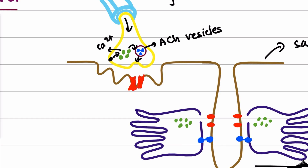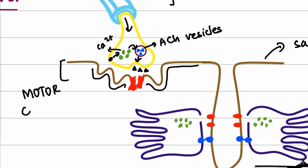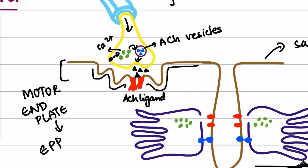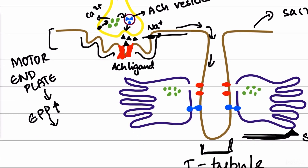Acetylcholine is released into the synaptic cleft. The muscle fiber has indentations at the neuromuscular junction, and this segment is known as the motor end plate. The released acetylcholine molecules bind to ACh ligands, generating an end plate potential. This end plate potential activates sodium channels on the muscle, causing excitation which is transmitted through the sarcolemma into the T-tubules.